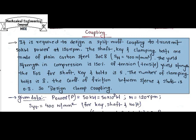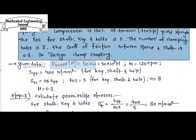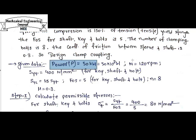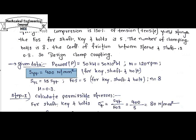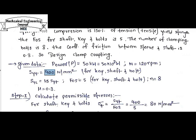The given data are: Power = 50 kilowatt = 50×10³ watt. Speed = 120 rpm. SYT for key, shaft, and bolt material = 400 N/mm². Yield compressive strength SYC = 1.5 × SYT = 1.5 × 400. Factor of safety for key, shaft, and bolt material = 5. Number of bolts n = 8. Coefficient of friction μ = 0.3.